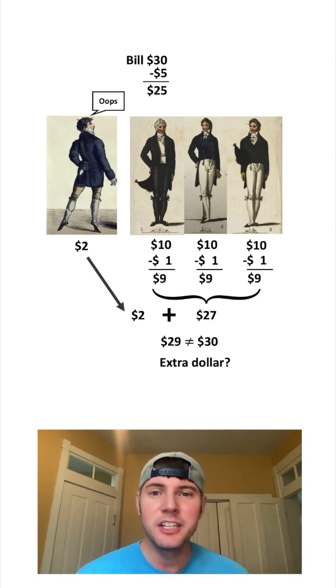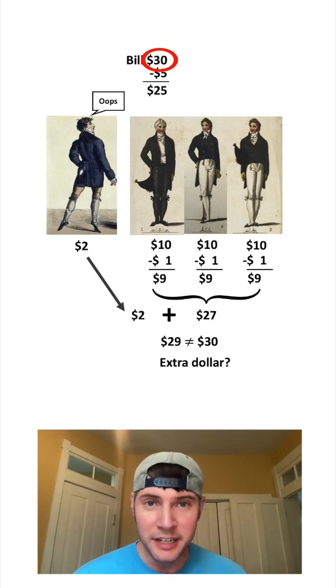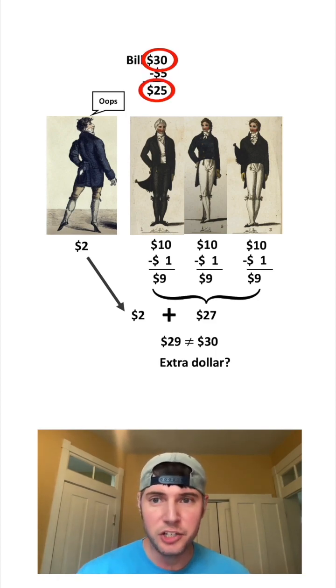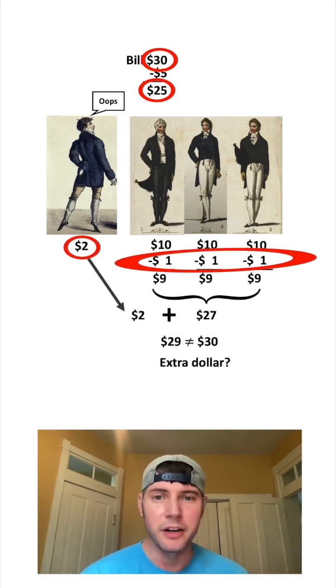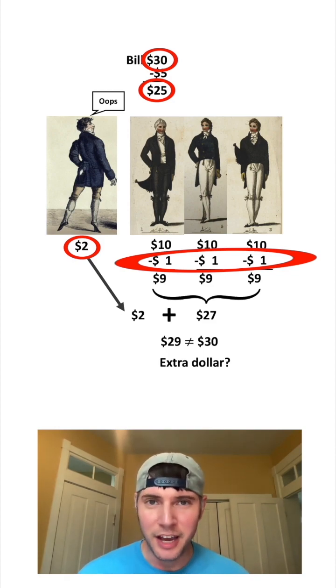So here's another way to look at it. We need to account for the $30 from the beginning of the problem. $25 is in the register of the restaurant, $3 is in the pockets of the three friends, $1 for each friend, and $2 is in the pocket of the waiter. These all add up to $30, so everything's accounted for.